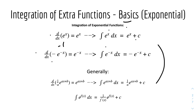So we have two general forms here. When we have 1 over a times e to the power of ax plus b, differentiating it gives e to the power of ax plus b. Therefore, working backwards, the integral of e to the power of ax plus b with respect to x equals 1 over a times e to the power of ax plus b plus c.